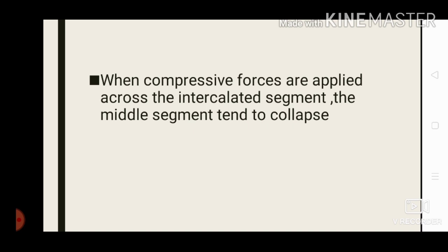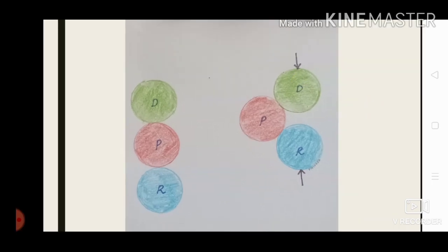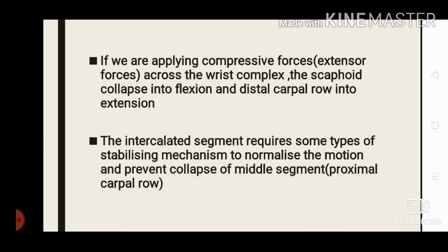When compressive forces are applied across the intercalated segment, the middle segment tends to collapse. The first and third segments will move in one direction and the middle segment will move in the opposite direction. This is the tendency of the intercalated segment. If compressive forces are applied across the wrist complex — mainly produced by extensor forces — the proximal carpal row collapses into flexion and the distal carpal row moves into extension.